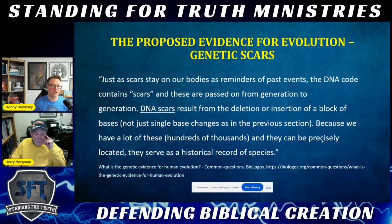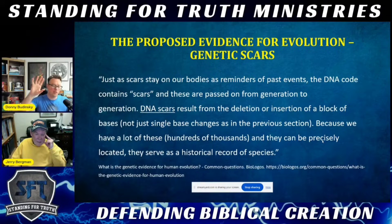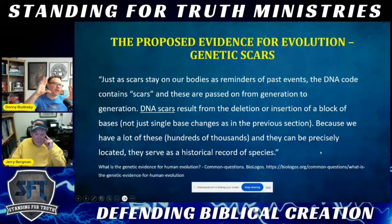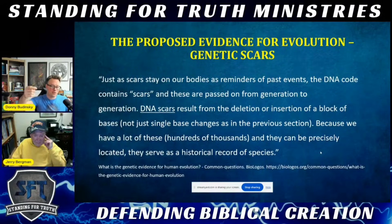Just because you say deletion or mutation does not necessarily mean that it is a mutation. If they look at a spot in the human genome where a DNA unit is missing but present in the chimpanzee genome, they'll say it was either added or deleted — but maybe it was never there. They won't even question that. They say because we have hundreds of thousands of these, precisely located, they serve as a historical record of species — that we share these genetic scars or genetic mistakes — pseudogenes — with chimpanzees, gorillas, and orangutans, and therefore must have inherited them from common ancestors.